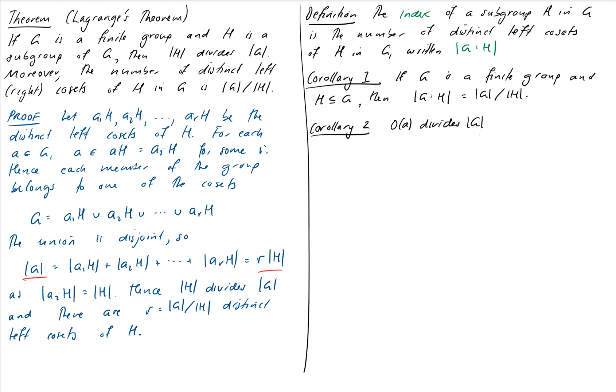Second corollary is very closely related again. It says that the order of an element A in our group divides the order of the group. That's because we know that the order of A is the order of the cyclic subgroup generated by A, and we know that cyclic subgroups are subgroups, and therefore by Lagrange's theorem, the order of those divides the order of the group. So the order of any element of the group divides the order of the group.